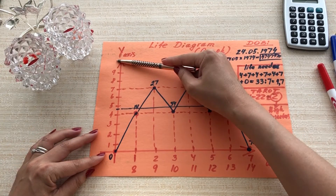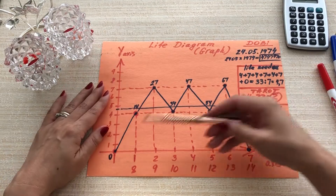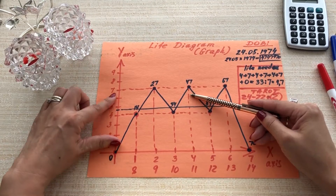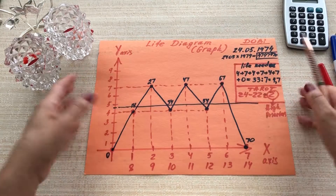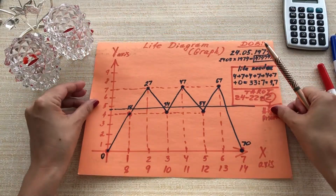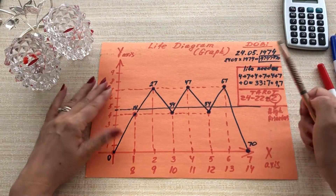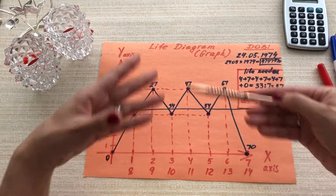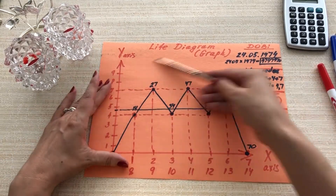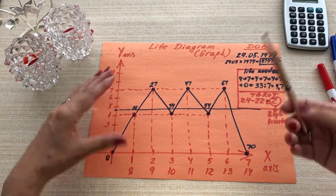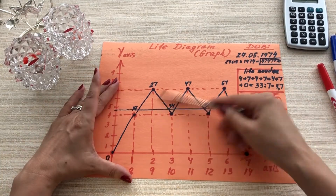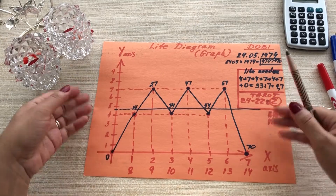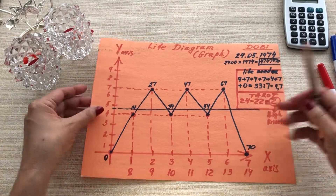There are nine numbers — you don't need to go and study what every number means. This graph I did for a friend of mine, so I will explain and show you based on it. This is how it's going to look when you finish your own graph. Now let's get started step by step.